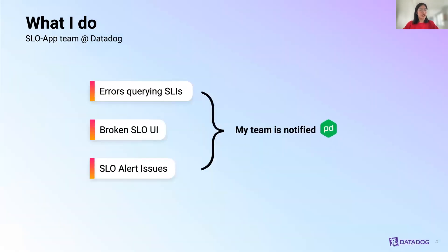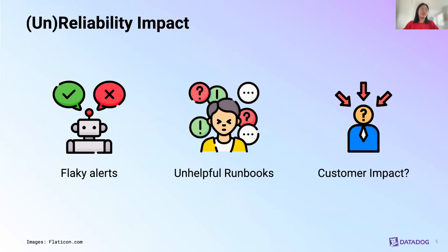Like any other engineering team, we have an on-call rotation for when things are broken. For example, if our users are unable to query for their SLOs, use the UI, or get alerted for their error budget and burn rates, we will get paged and I get to investigate the issue. Like any other engineering team, there are common drawbacks to parts of the reliability aspect. We often get flaky alerts where monitors may auto-resolve after triggering for a few minutes. We also get runbooks that may be too generalized for the monitor they're associated to. And most importantly, we're not always sure what the customer impact looks like for a given page that gets triggered.